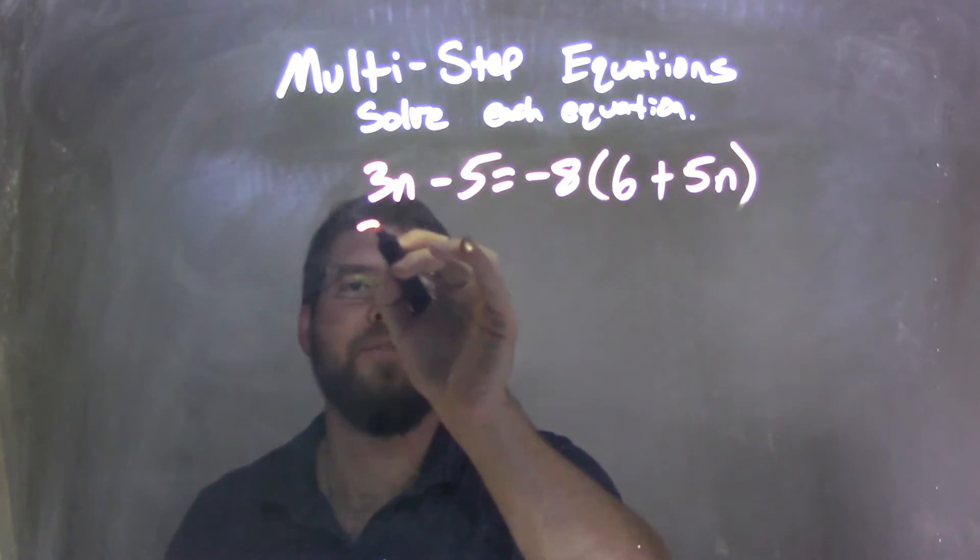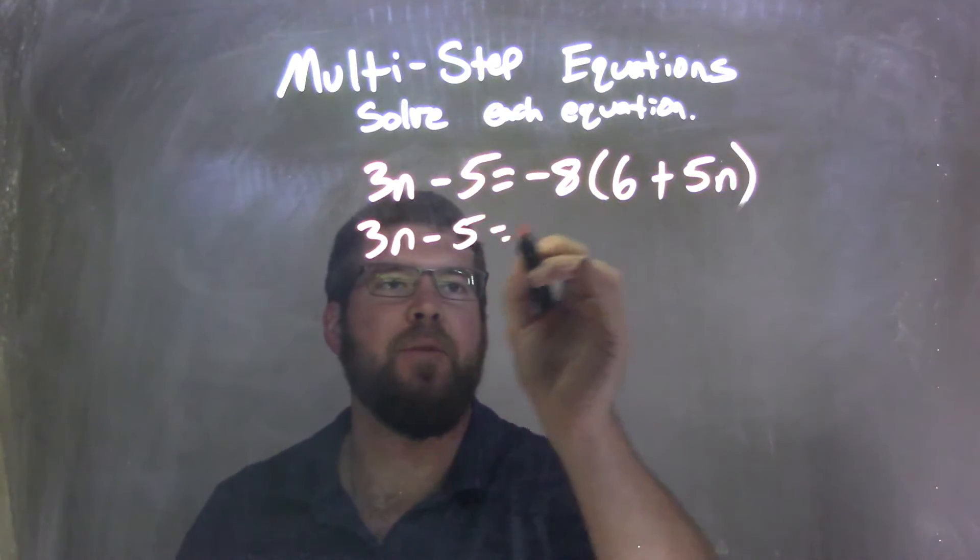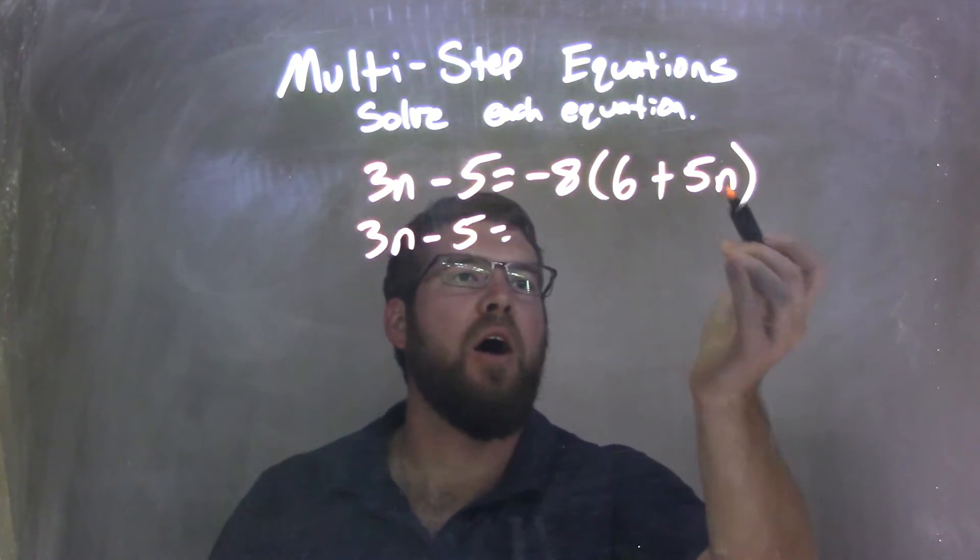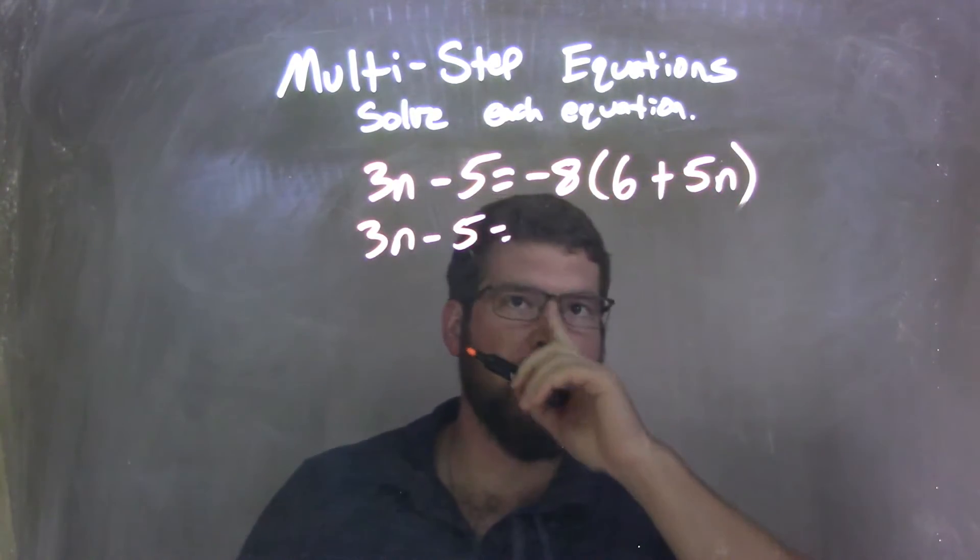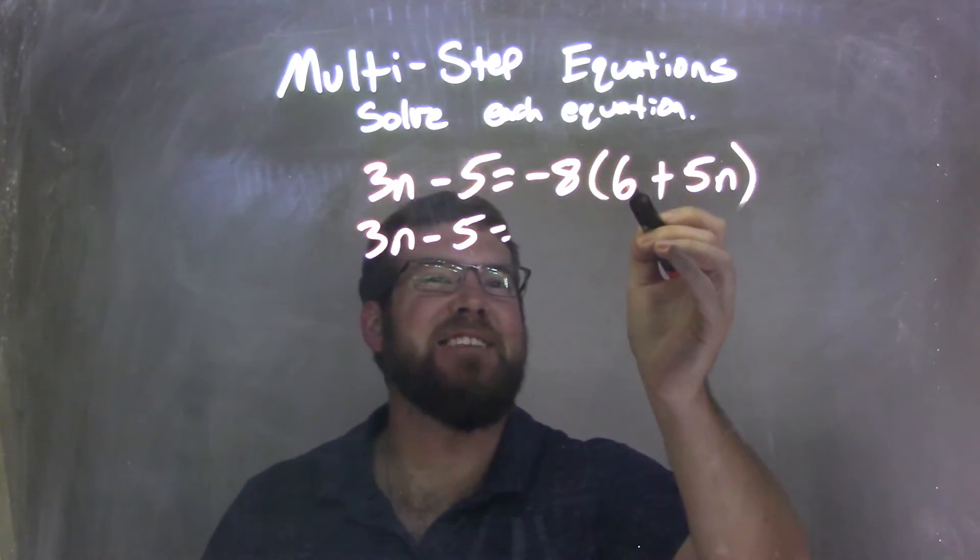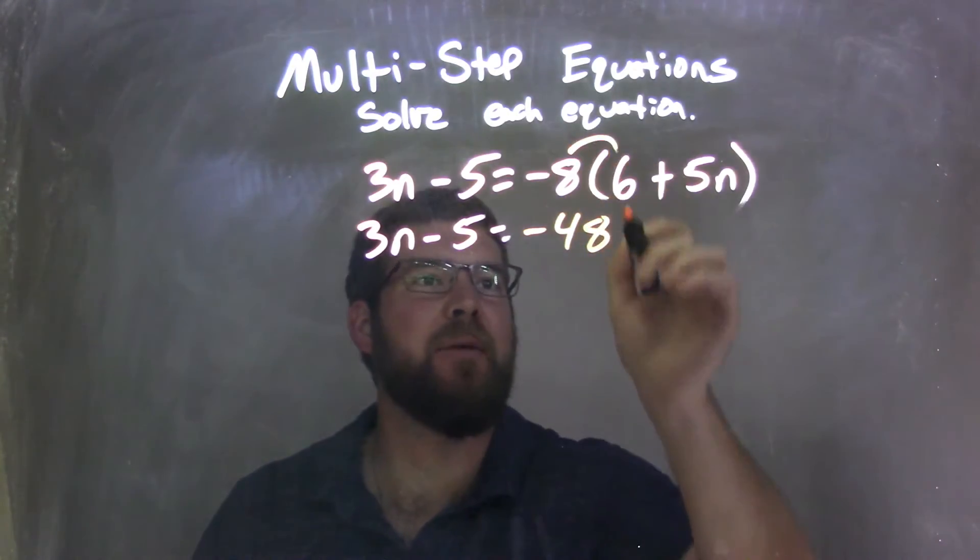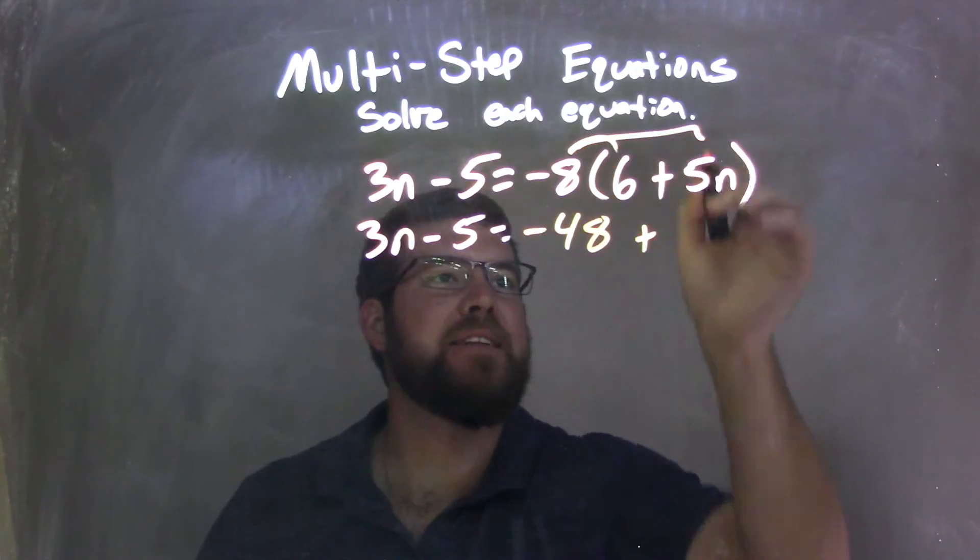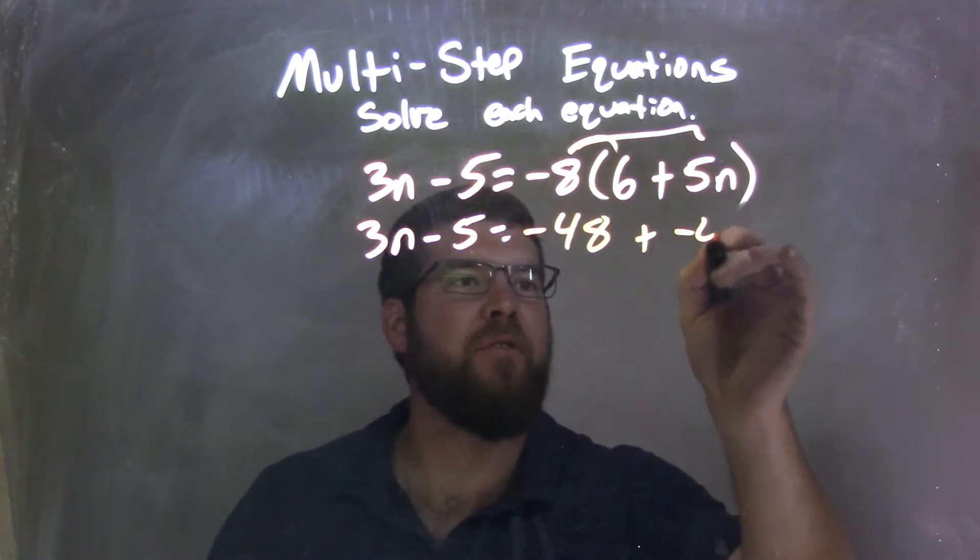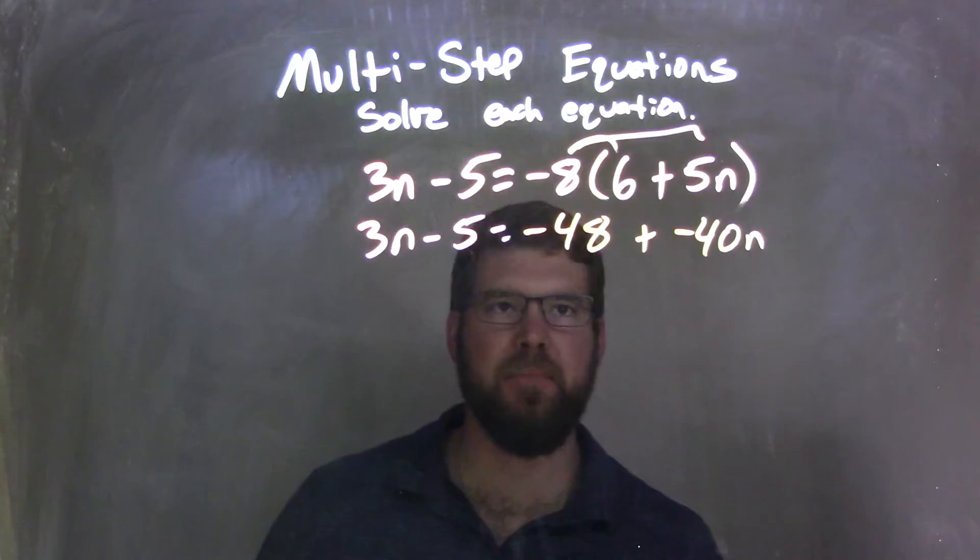I'm first going to write 3n minus 5 equals, but I need to distribute that 8 across here. So negative 8 times 6 is negative 48, plus negative 8 times 5n is negative 40n.